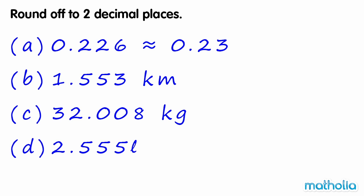B. 1.553 kilometres. Let's look at the digit in the thousandth place. The digit in the thousandth place is 3. Recall that for digits 4 or less, we round down. So 1.553 kilometres is approximately equal to 1.55 kilometres.